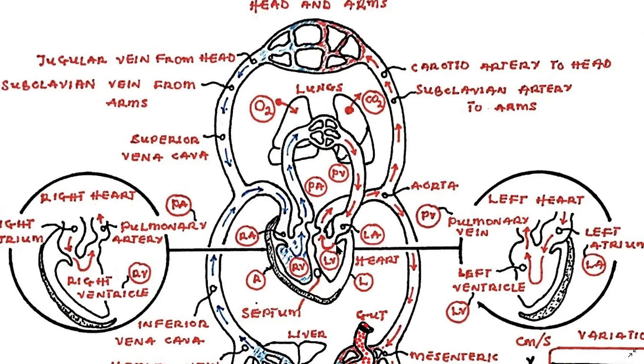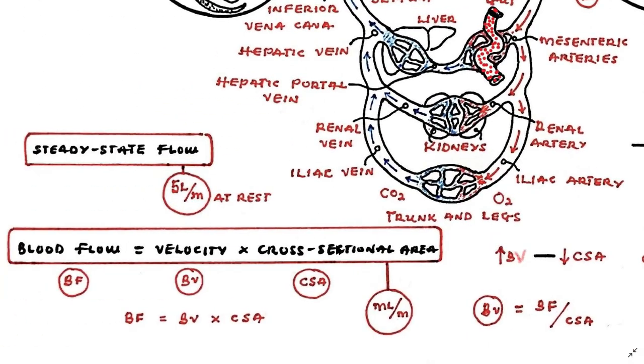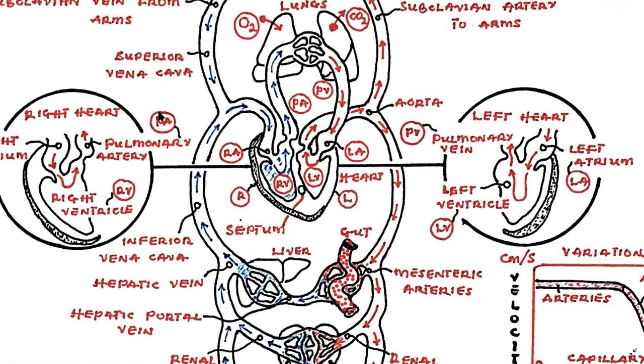Now let's look at the properties of flow and velocity of blood. We start with the steady state flow of blood. The steady state blood flow is the same throughout any total cross section of the circulation. During each minute of a steady state, the amount of blood flowing out of the right heart is equal to the amount flowing into the left heart.